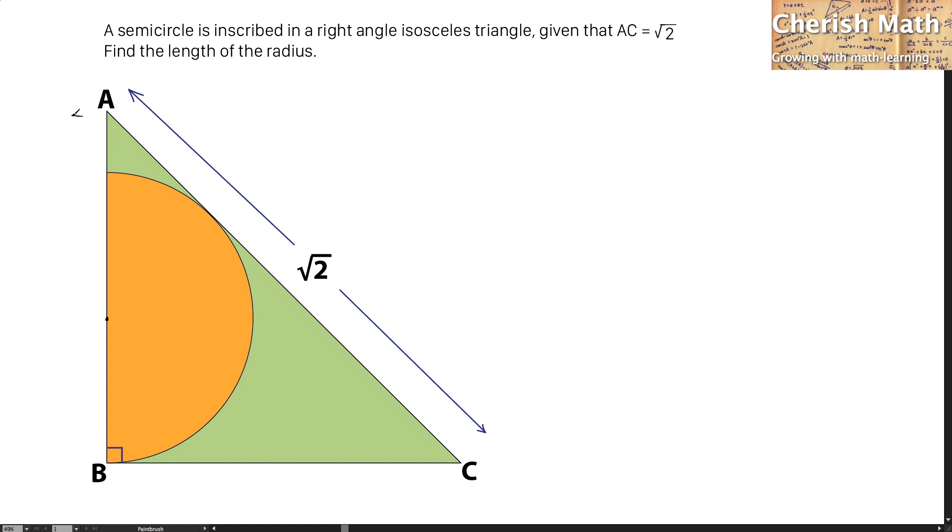Let's assume that the length of AB is equal to X. Since this is an isosceles triangle, the length of BC would be the same as AB.